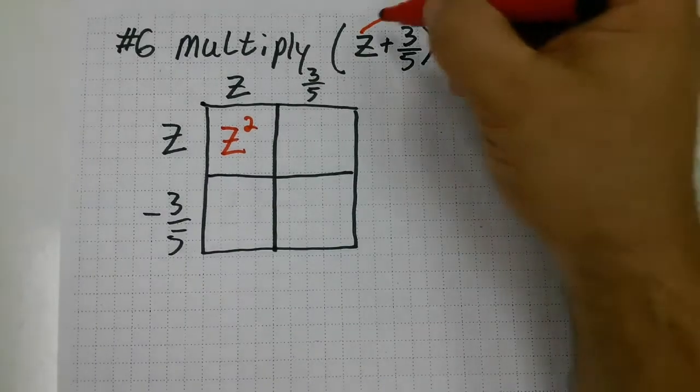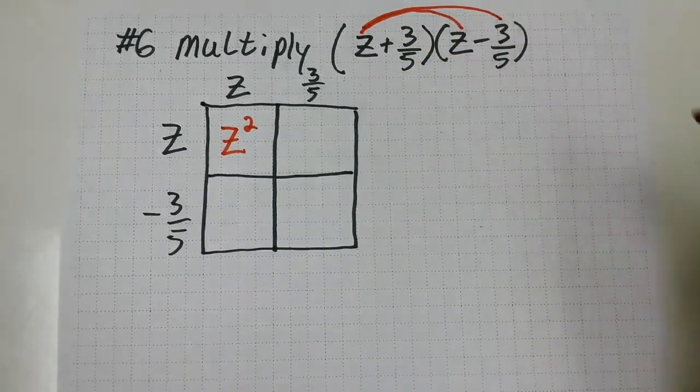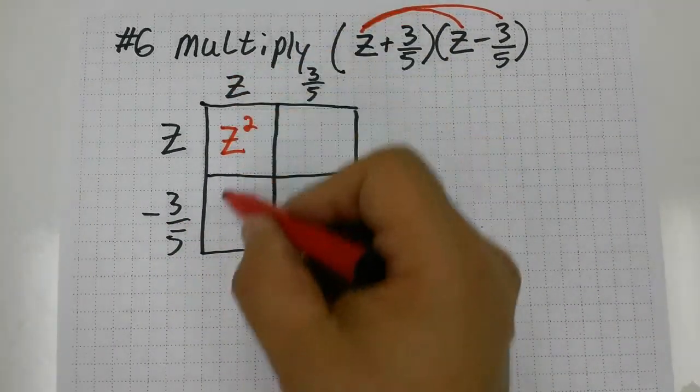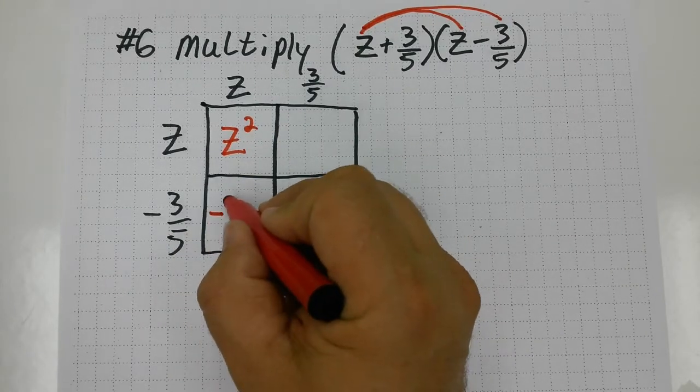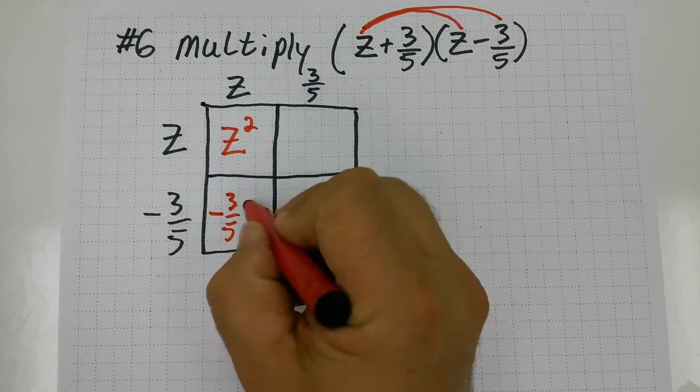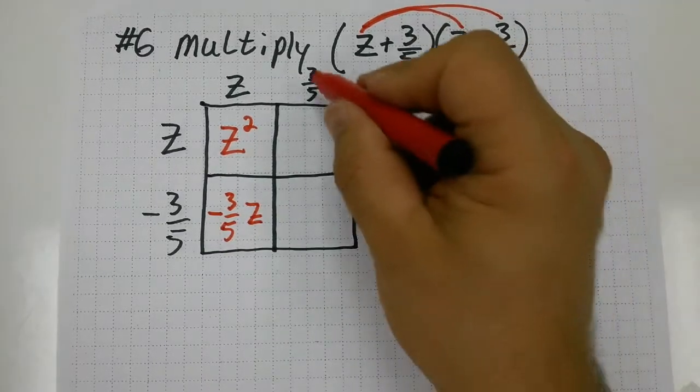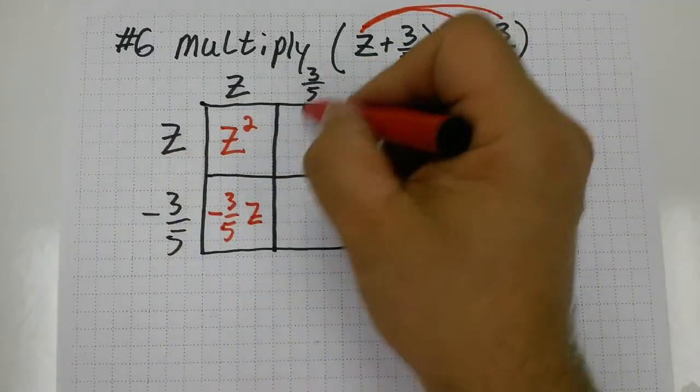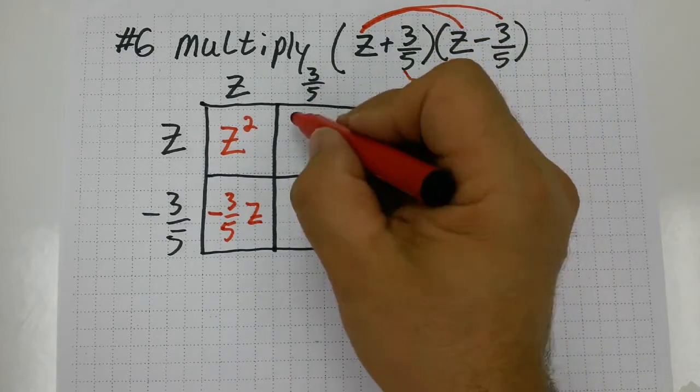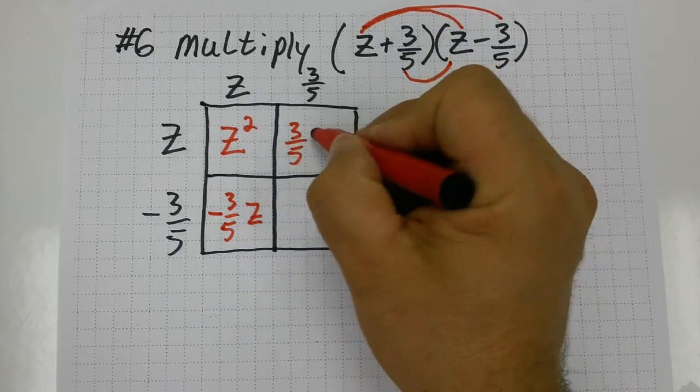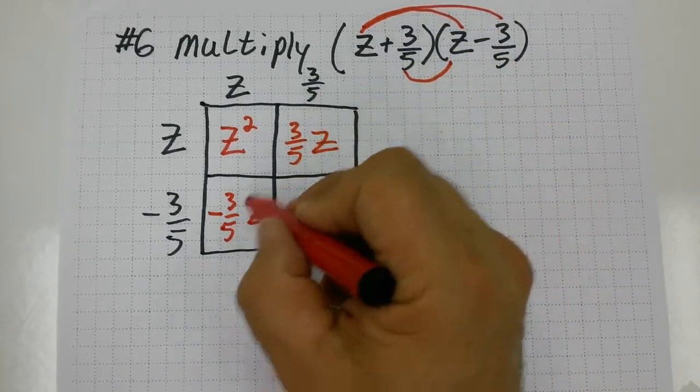And then outer would be z times negative 3 fifths. So negative 3 fifths times z. That gives me negative 3 fifths z. And then the inner would be 3 fifths times z or z times 3 fifths for my Punnett. That's 3 fifths z. Notice these are going to cancel out.